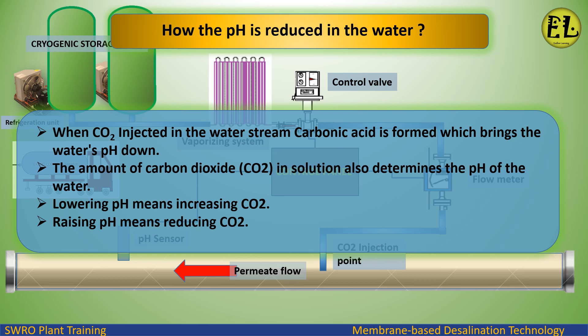When CO2 is injected into the water stream, carbonic acid is formed, which brings the water's pH down. The amount of carbon dioxide in solution determines the pH of the water. Lowering pH means increasing CO2; raising pH means reducing CO2.